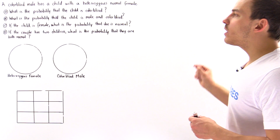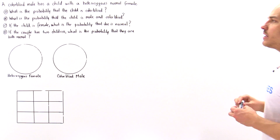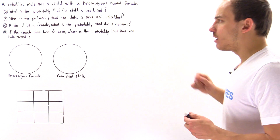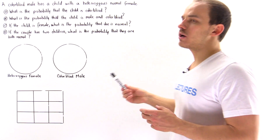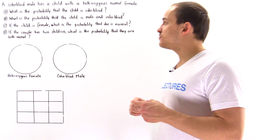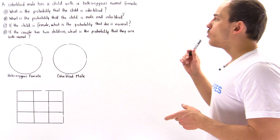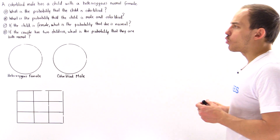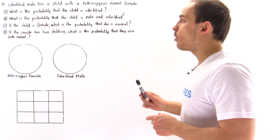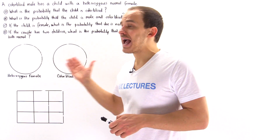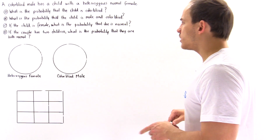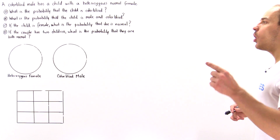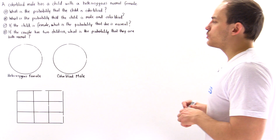In part B, what is the probability that the child is male and colorblind? In part C, if the child is female, what is the probability that she is normal? And in part D, if the couple has two children, what is the probability that both of them are normal?